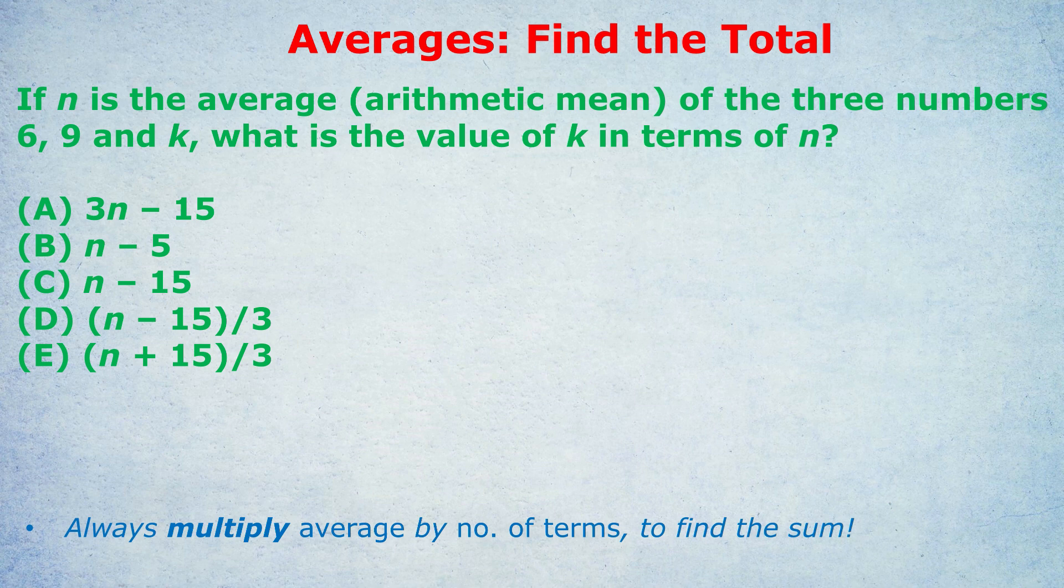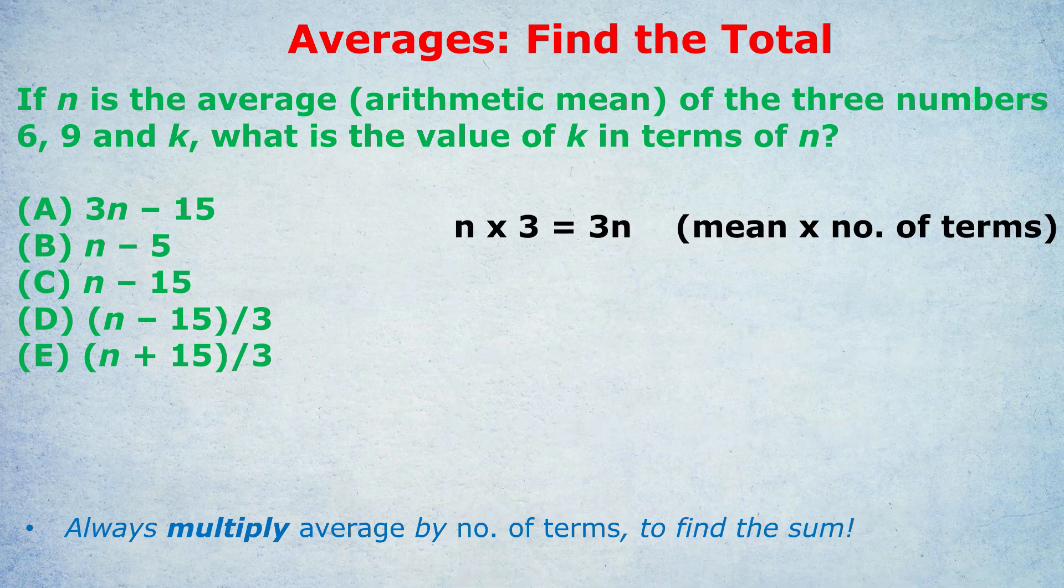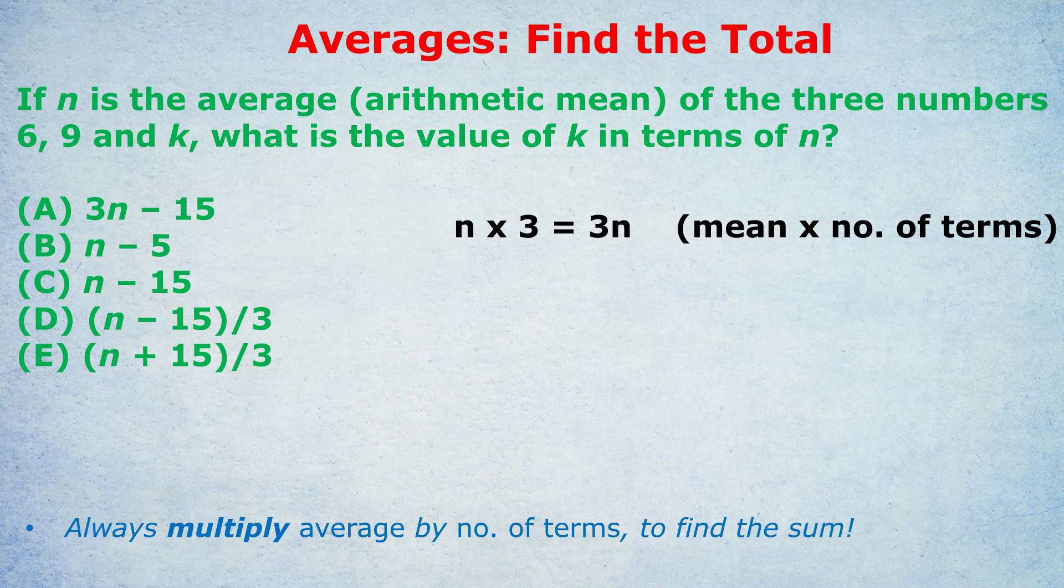They've told us the average is n. So we're going to automatically, without really thinking why, we're going to multiply that by the number of terms to find the total. There are three terms, three numbers here. So n, the average, times 3 gives us the sum or the total. n times 3 is 3n. And now we can write a simple equation. We know that the sum or the total of these three terms equals 3n. So we write 6 plus 9 plus k must equal 3n. All we have to do now is rearrange that to find k in terms of n.